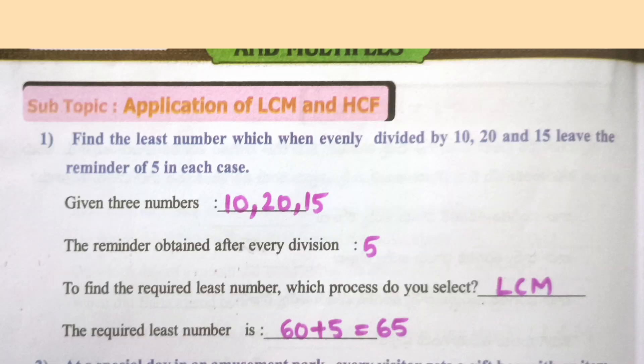Worksheet 22: Find the least number which, when evenly divided by 10, 20 and 15, leaves a remainder of 5 in each case. Given numbers: 10, 20 and 15. The remainder after every division is 5. Process: LCM. The required least number = 60 + 5 = 65.